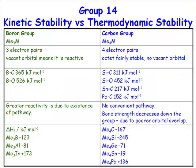Moving on to group 14 organometallic chemistry. You have come into close contact on many occasions with group 14 organometallic compounds, whereas group 13 compounds are extremely reactive. Group 14 organometallic compounds have very low reactivity. Famous examples include tetramethylsilane, whereas triethylaluminium is pyrophoric — it bursts into flames spontaneously and you practically can't put it out.